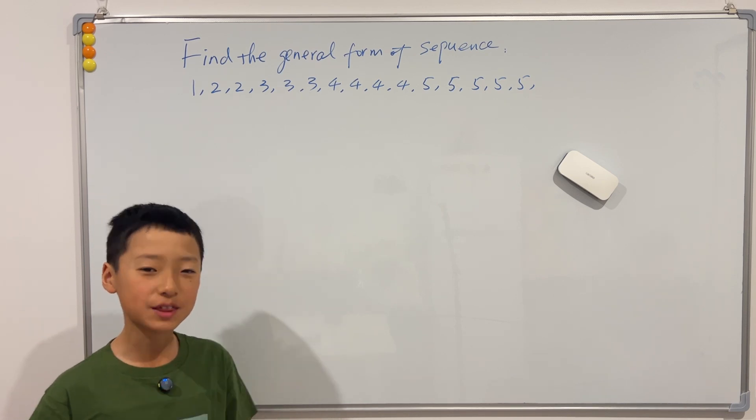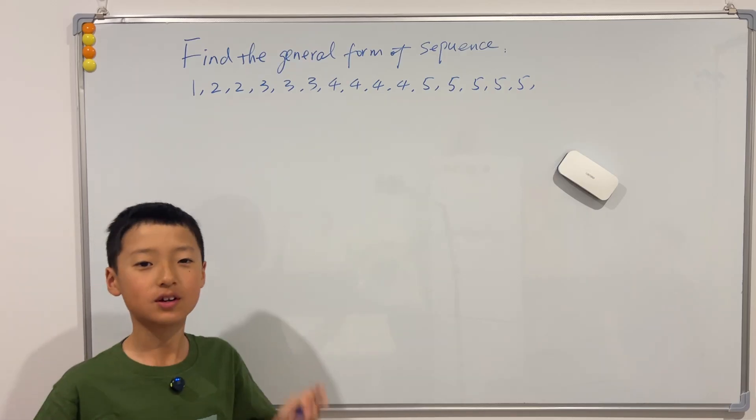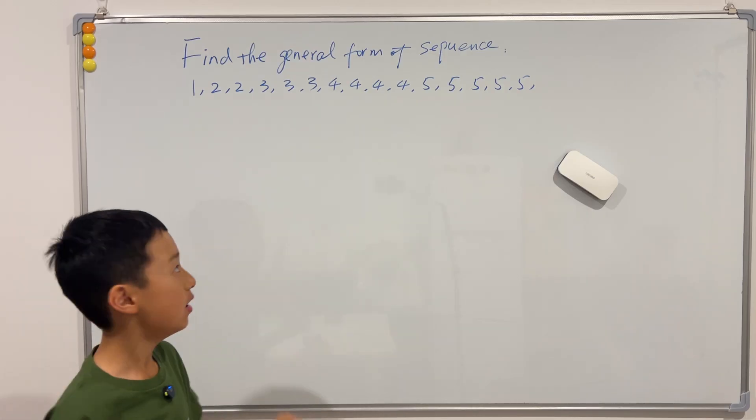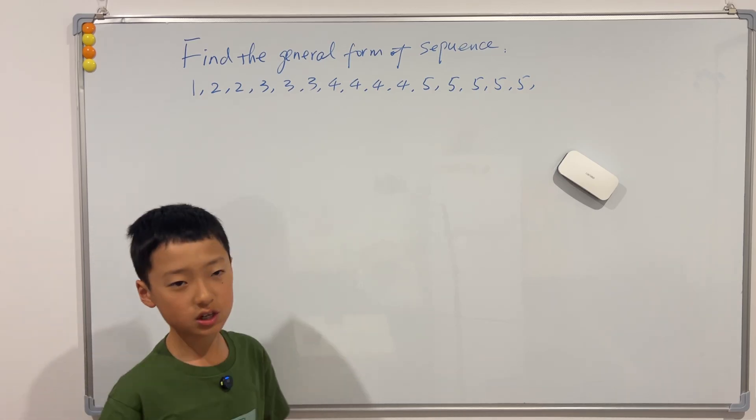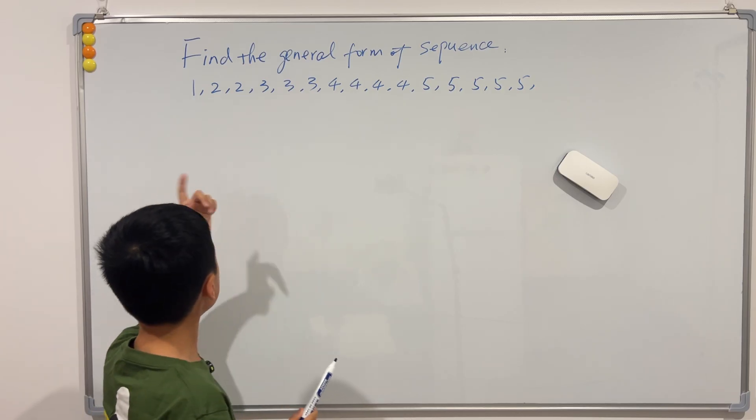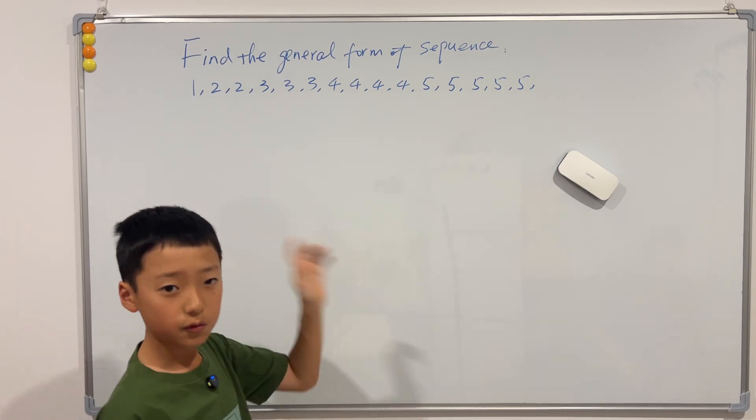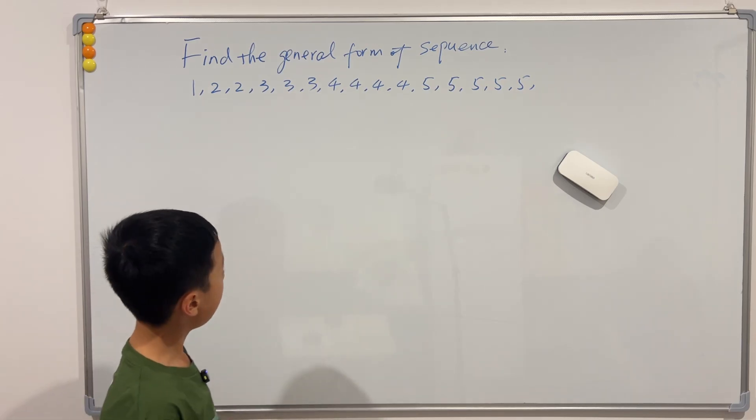Hi guys, welcome back to another video of me teaching. Today I have this question on the board for you guys, so let's just get into the question. This question tells us to find the general form of the sequence: 1, 2, 2, 2, 3, 4, 4, 4, 4, and so on. So how do we find the general form of this?